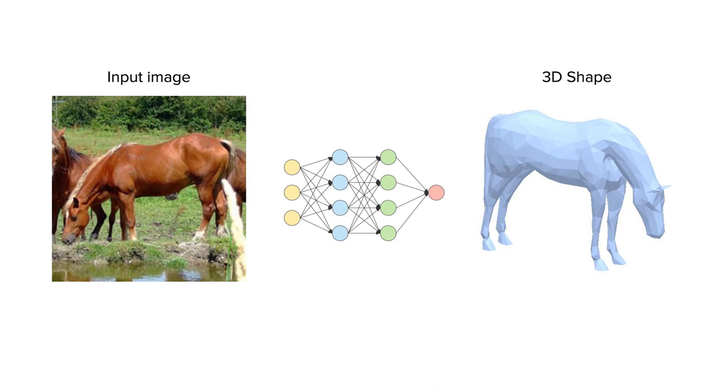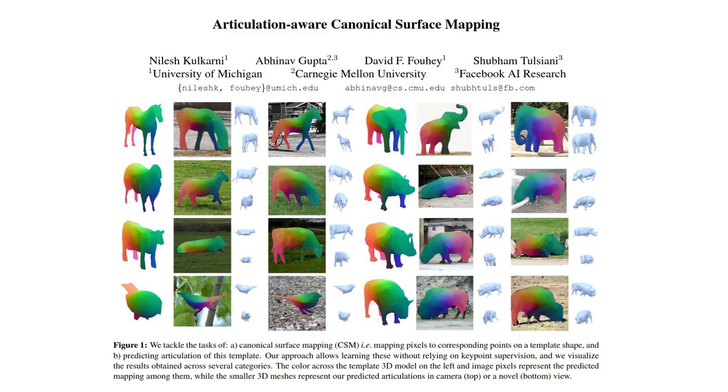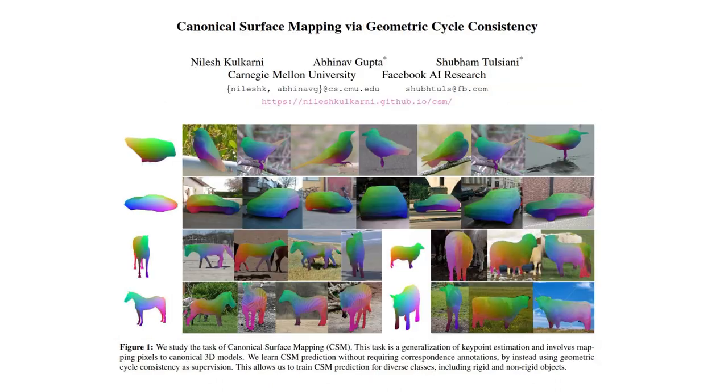What up guys, Artemis here and today I will tell you how to create a neural network that can predict 3D image of an animal by a single photo. We will take a look at two papers, Articulation Aware Canonical Surface Mapping and its follow-up Canonical Surface Mapping via Geometric Cycle Consistency. Both from the same first author, Nilesh Kolkarni and Facebook AI Research. Let's start.